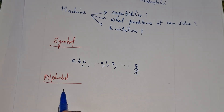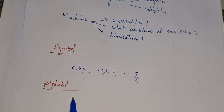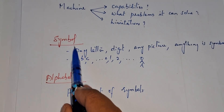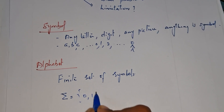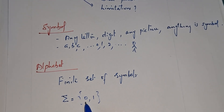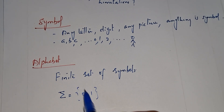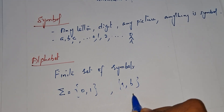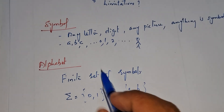Next is: what is an alphabet? Alphabet means a finite set of symbols. A finite set of symbols is known as an alphabet. It is represented using sigma. For example, sigma = {0, 1}. We are taking the finite set of symbols 0 and 1, so we can consider it as an alphabet. The set {0,1} or {A, B} is also an alphabet. So a group of symbols — a finite set of symbols — is known as an alphabet.